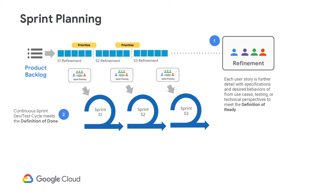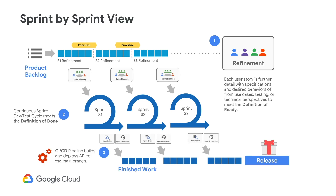The team also needs to set the definition of done for a user story at the start of the project. This is the line the team draws in terms of the standard of finish and quality that should be adhered to, so there's no misunderstanding at the end of the sprint when a user story is marked done. In the last step, finished work can be queued for product release and bundled per sprint. The automated CICD pipeline helps the last leg of the process quickly flow from tested and approved code into the main branch.